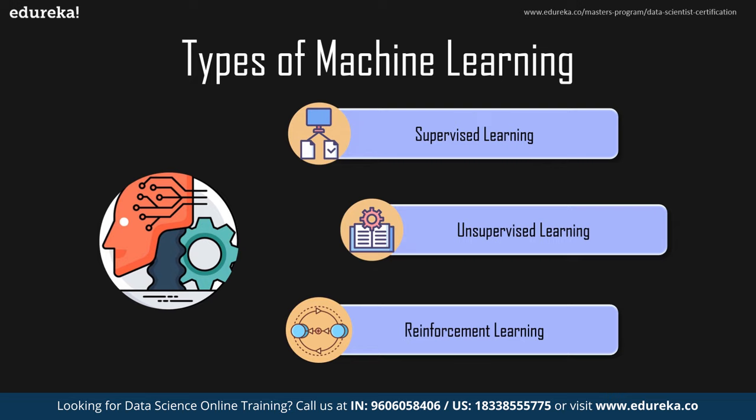In reinforcement learning, there is no predefined answer. Instead, the reinforcement agent decides how to perform a given task through a sequence of feedback based on actions performed. Where there is no training dataset, it learns through its own experience. The machine learning we'll be using for this project is supervised learning.